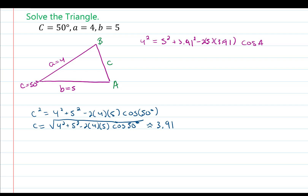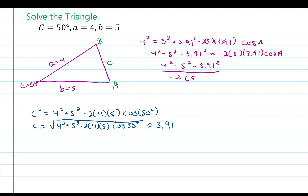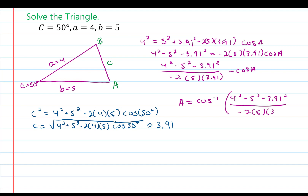I now need to solve for angle A. I'll start by subtracting 5 squared and 3.91 squared from both sides, giving me: 4 squared minus 5 squared minus 3.91 squared equals negative 2 times 5 times 3.91 times cosine of angle A. Next, I divide both sides by negative 2 times 5 times 3.91, giving me: (4 squared minus 5 squared minus 3.91 squared) divided by (negative 2 times 5 times 3.91) equals cosine of angle A. Finally, I take the inverse cosine of both sides: A equals the inverse cosine of that expression.